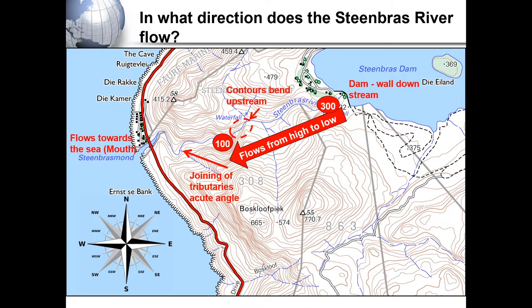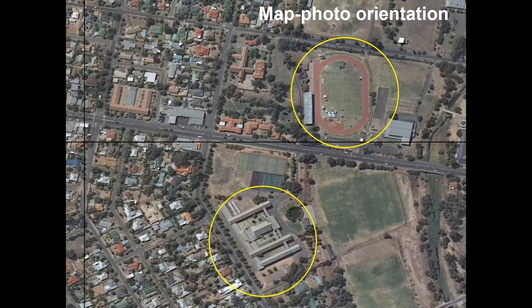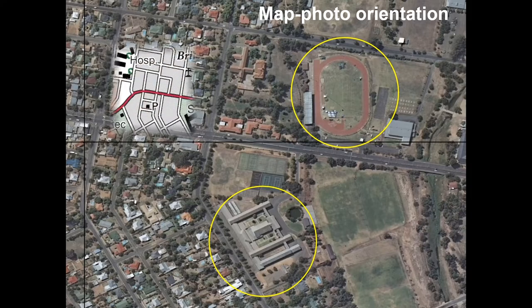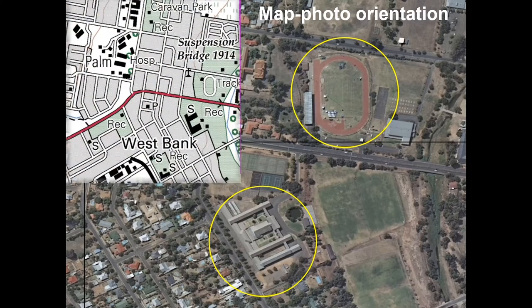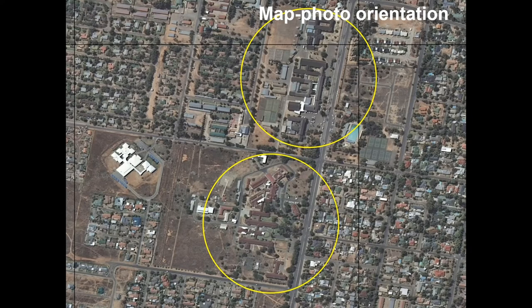Let's have a look at orientating our map photo. There you can see the track as well as the school. Another example.